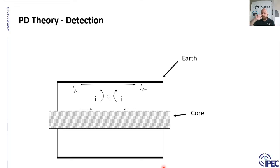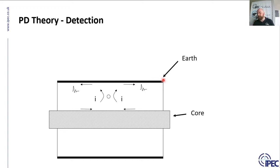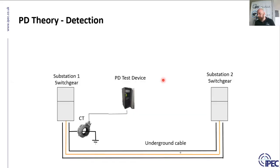We can apply HFCTs around a cable because those equal and opposite signals are trapped inside — the cable acts as a Faraday cage, so the high frequency signal cannot escape. From the PD source the signals travel along the core and along the earth. These are high frequency signals — not high current — very fast-moving signals traveling along the inside of the cable.